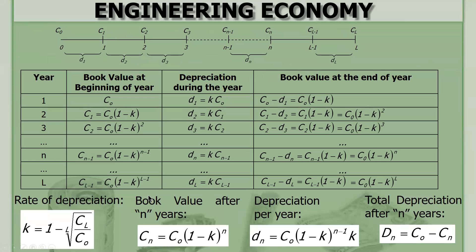Let's review. This is the formula for the declining balance method. When we solve K using the declining balance method, it is expressed with the salvage value. But for the double declining balance method, we will no longer use that formula. Instead, K is 2 over L. So for these formulas, including the salvage value, you just replace K by 2 over L.